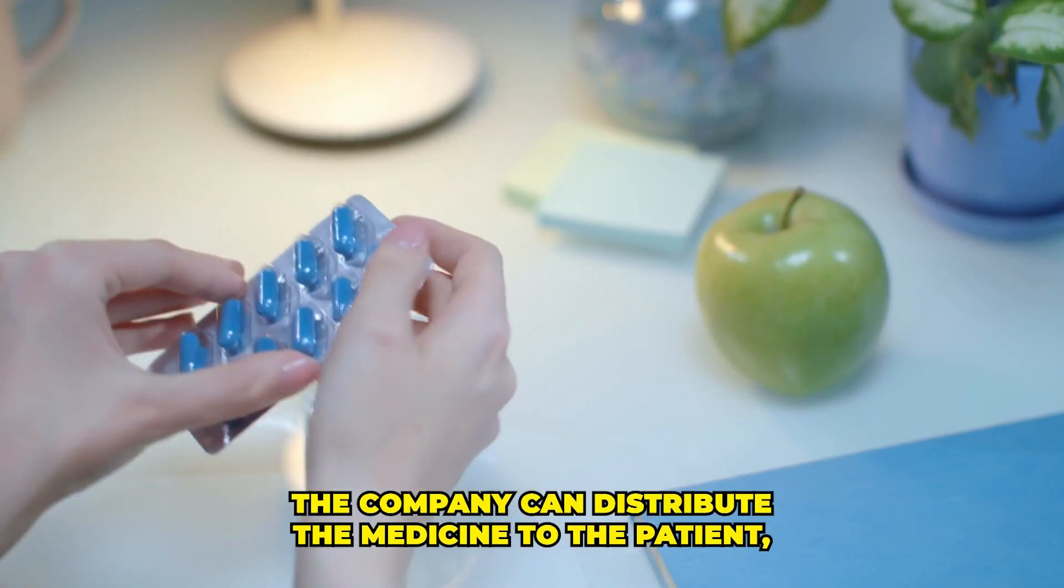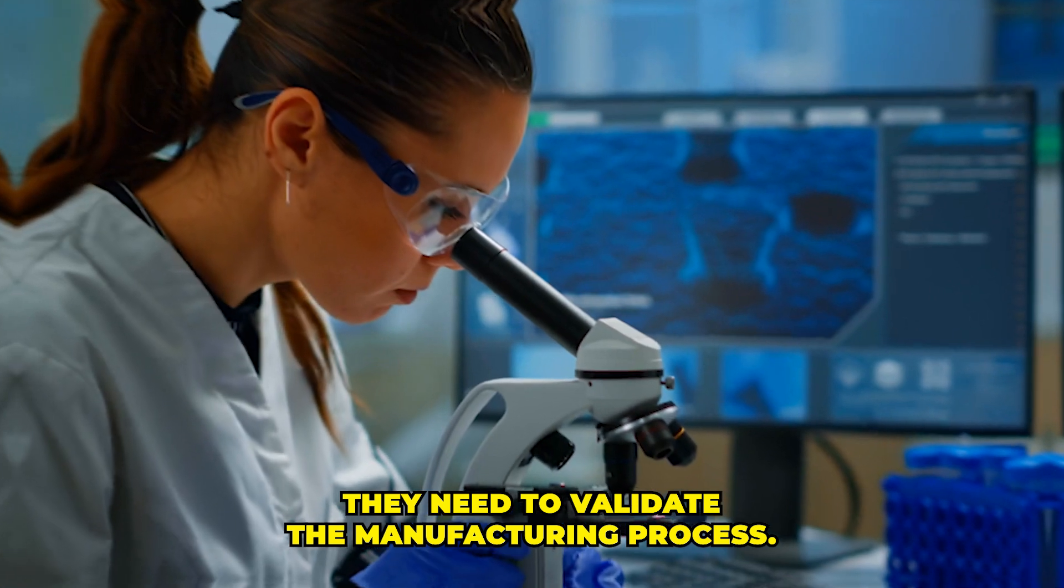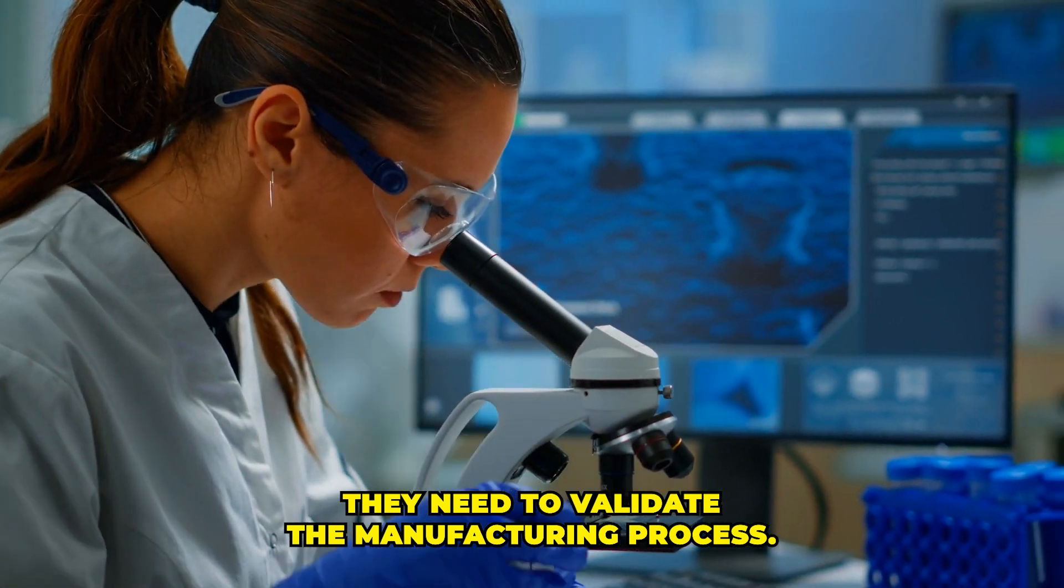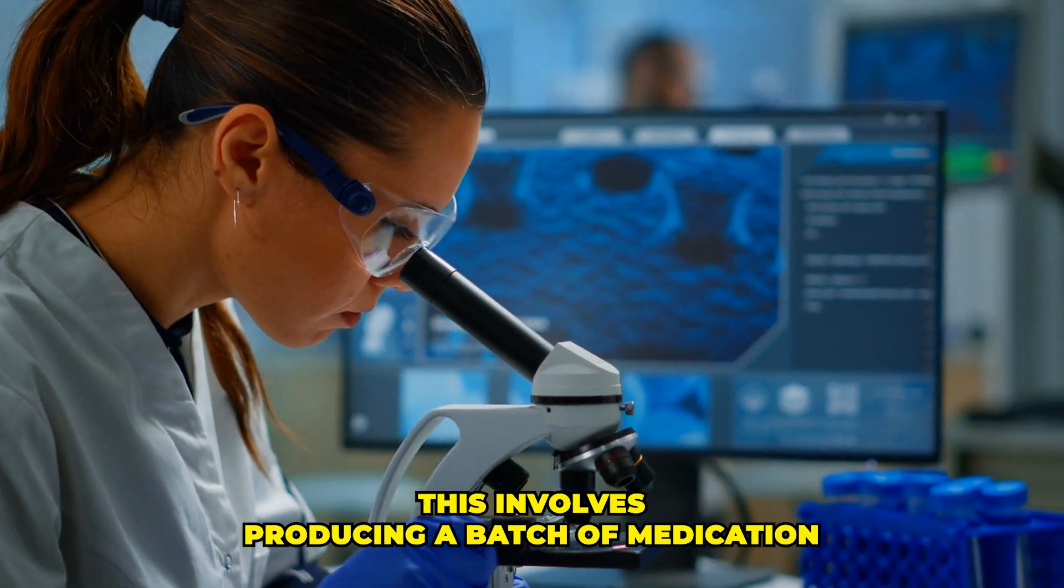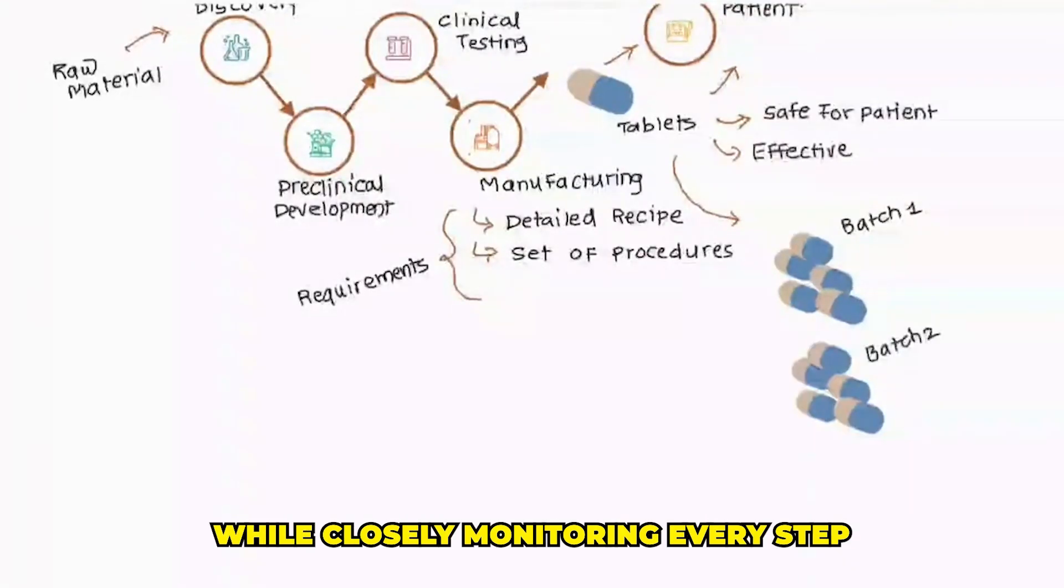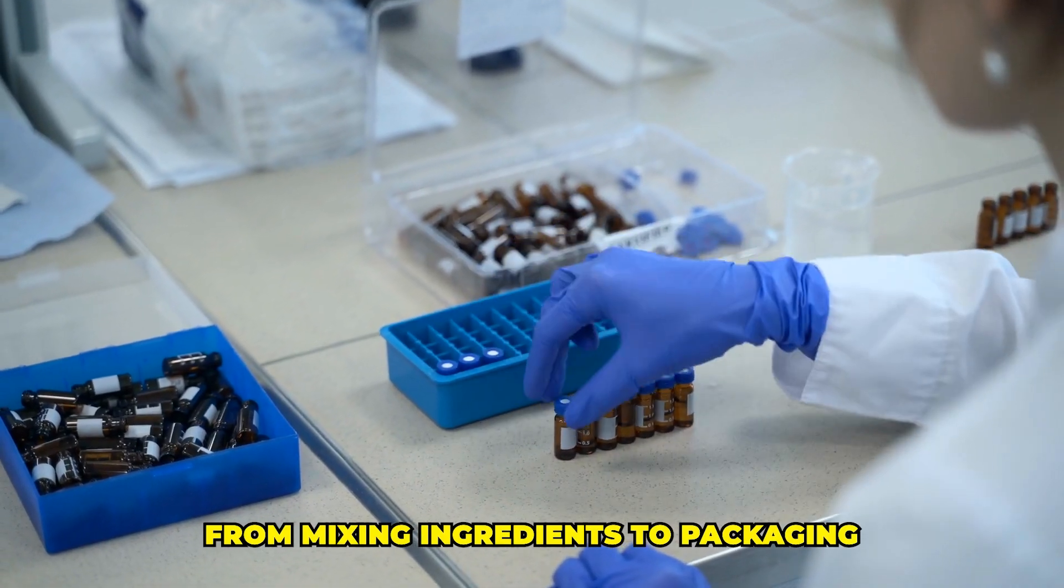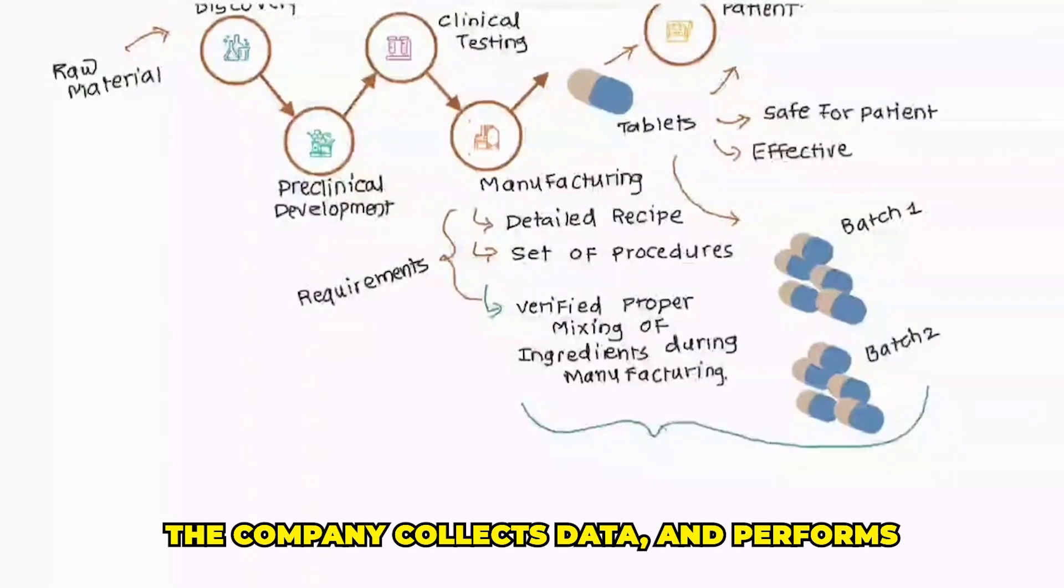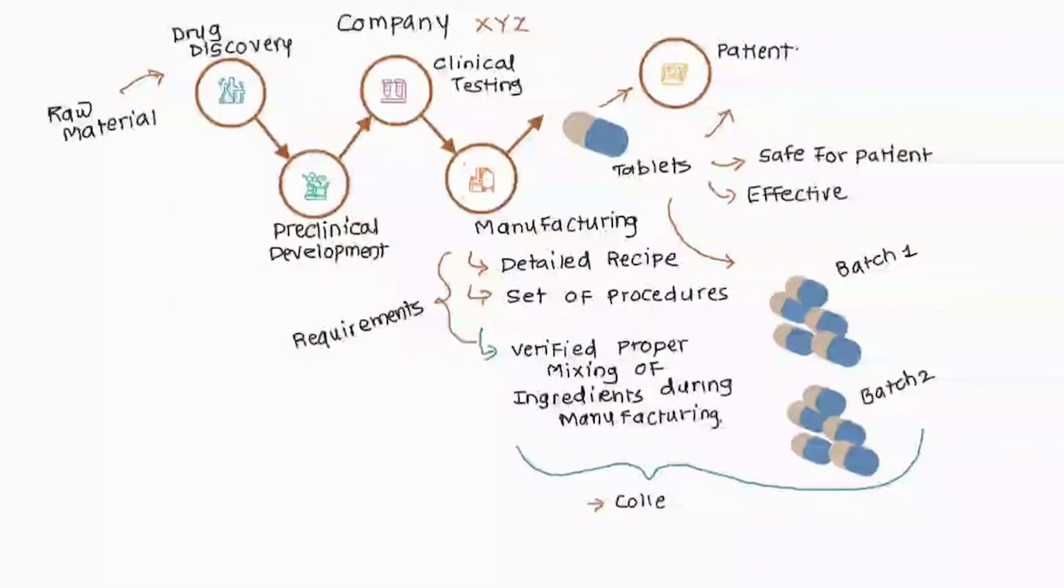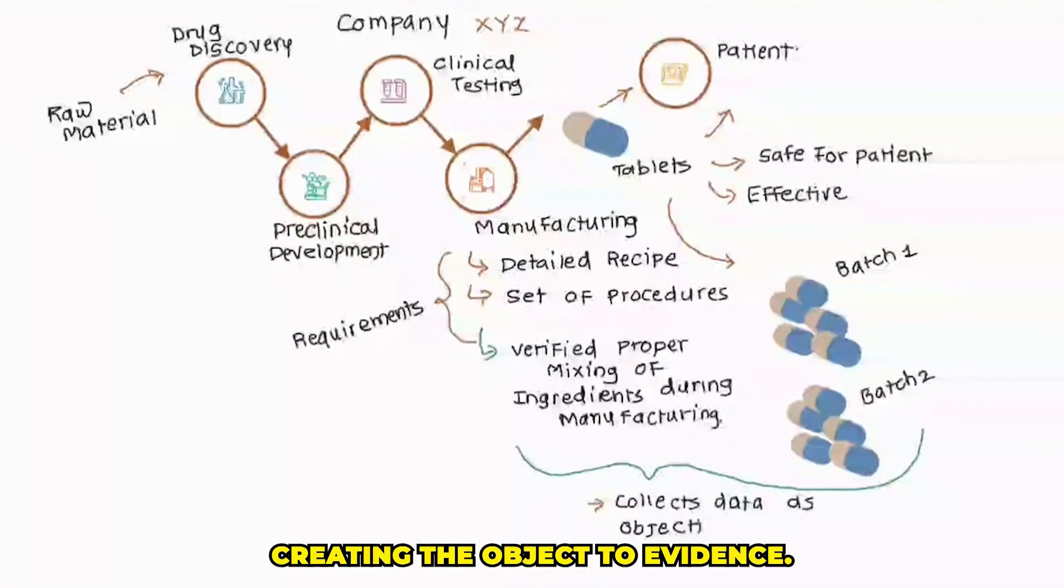Before the company can distribute the medicine to the patient, they need to validate the manufacturing process. This involves producing a batch of medication while closely monitoring every step, from mixing ingredients to packaging. The company collects data and performs tests at various stages of production, creating the objective evidence.